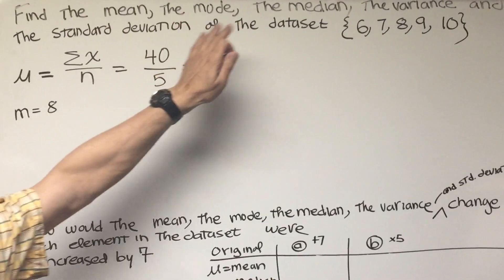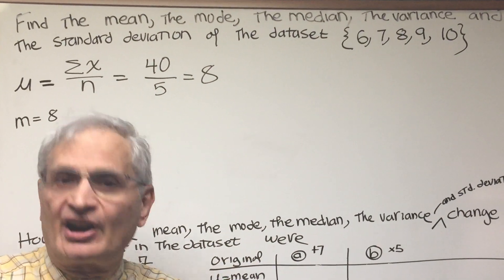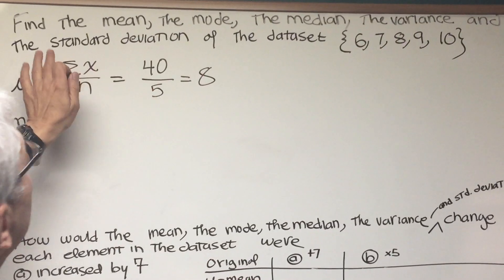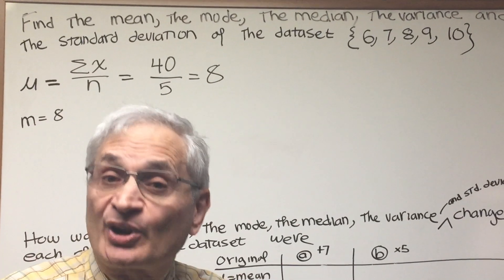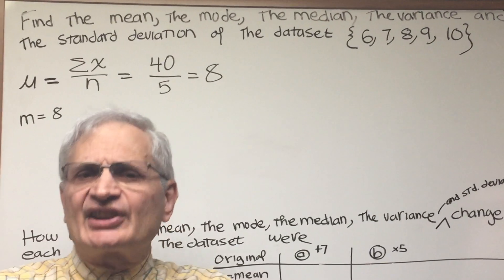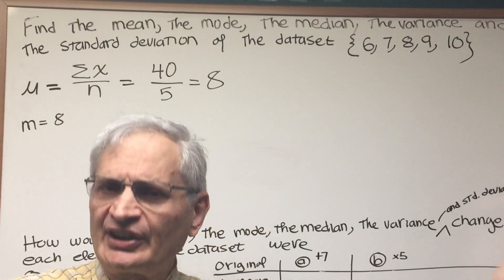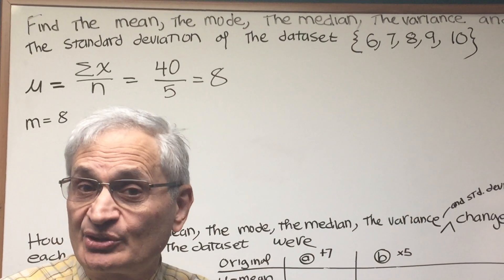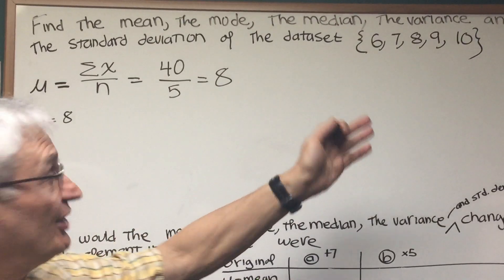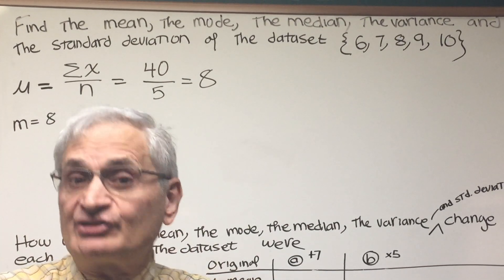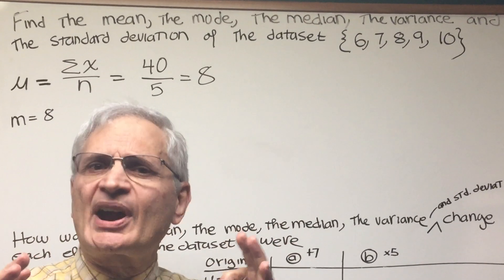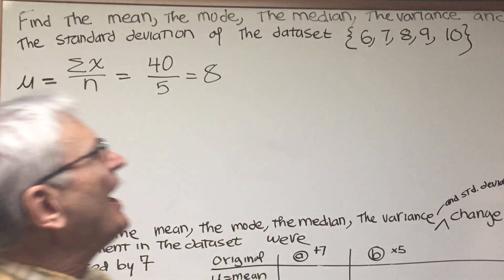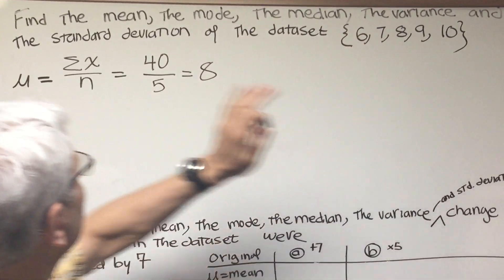So now the mean, the mode, and the median are measures of central tendency of a data set, what the general behavior is of the center of that data set. The variance and standard deviation are called measures of dispersion because they measure to what degree the data is dispersed on the number line. Now, how do you figure out the variance and the standard deviation?